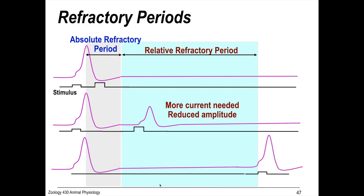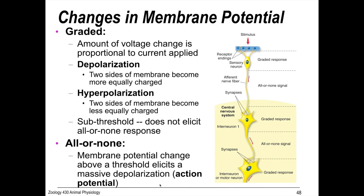We have action potentials and graded potentials. Graded potentials are variable. So, a variable amount of voltage change is proportional to the current that's applied. So, it's sort of sensitive to the amount of stimulus, and you get a different amount of voltage output.